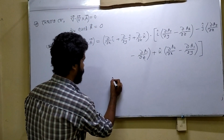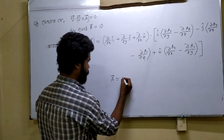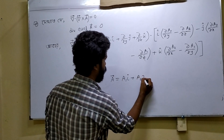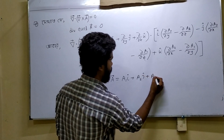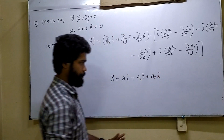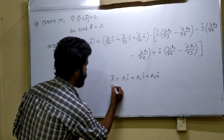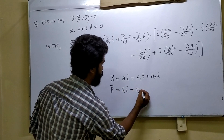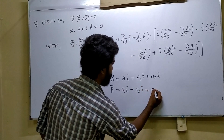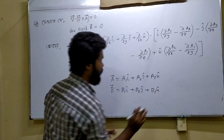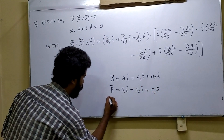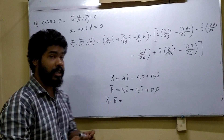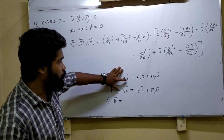We write vector A as a1 i plus a2 j plus a3 k, and vector B as b1 i plus b2 j plus b3 k. The dot product A dot B gives us the sum of component-wise products: a1 b1 plus a2 b2 plus a3 b3.